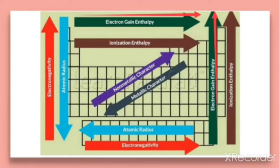Atomic radius decreases from left to right in a period, as we have already discussed. The arrows on the chart show the direction of increase. Top to bottom, atomic radius is increasing.